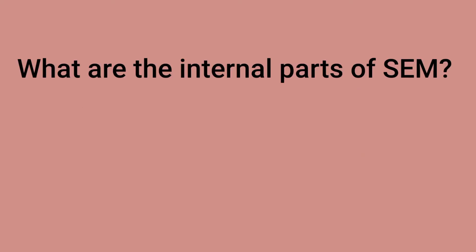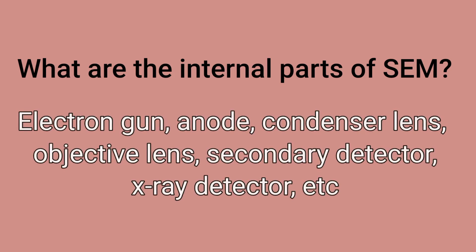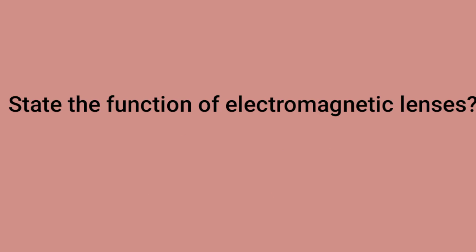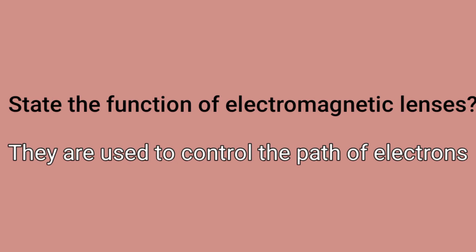The internal parts of SEM consist of the electron gun, anode, condenser lens, objective lens, secondary detector, and X-ray detector. The function of electromagnetic lenses is to control the path of electrons.